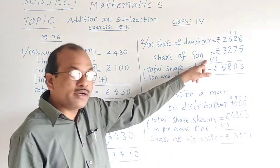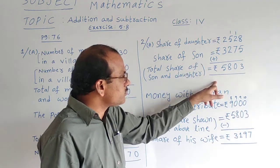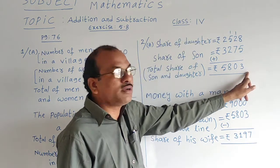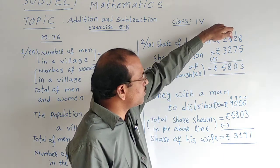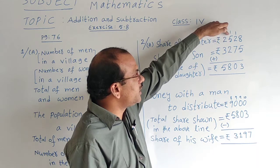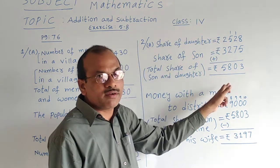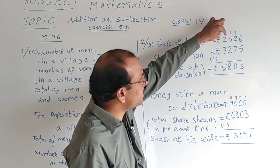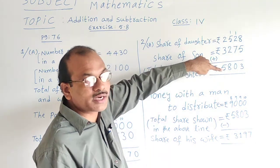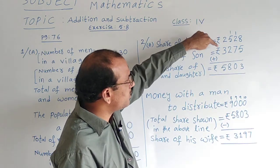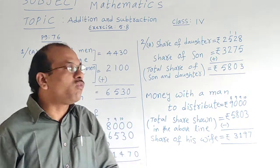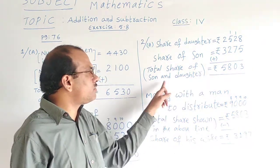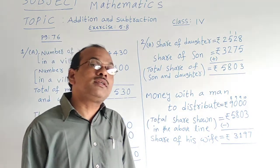That is the addition, so both I have to add. Eight and five addition is thirteen; one is carried and three is written. One and two is three, and three and seven addition is ten; one carried and zero written. One and five is six; six and two is eight. Two and three addition gives five. Total share of son and daughter is 5,803 rupees.